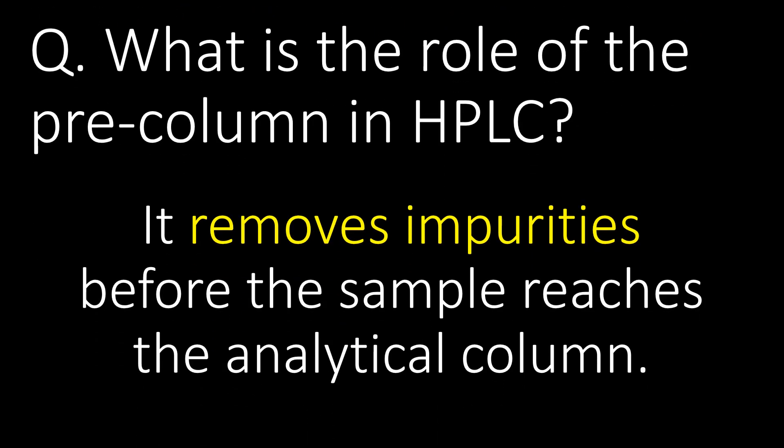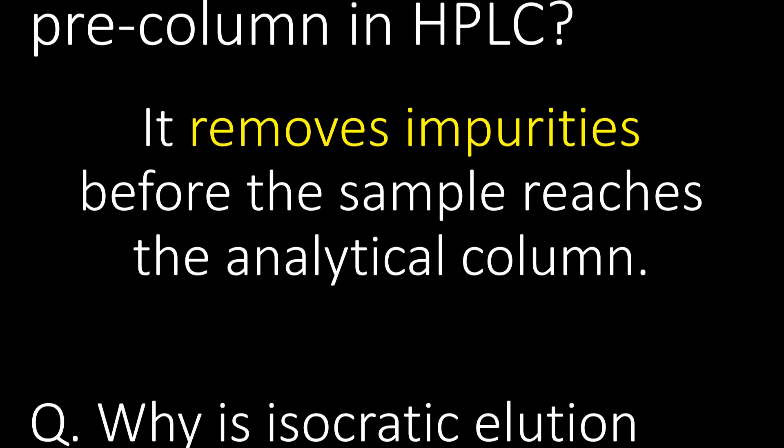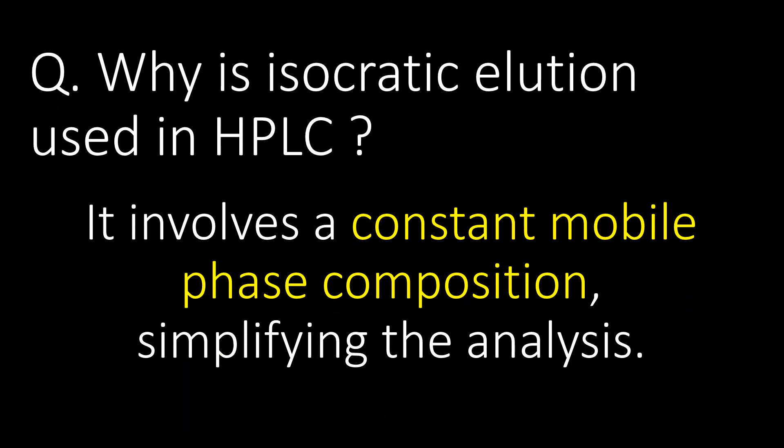What is the role of the pre-column in HPLC? The pre-column in HPLC removes impurities before the sample reaches the analytical column. Isocratic elution is used in HPLC as it involves a constant mobile phase composition, simplifying the analysis.